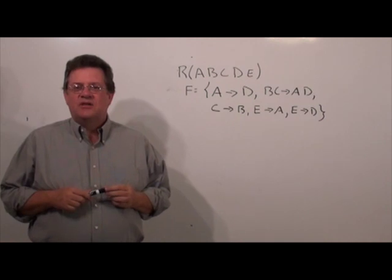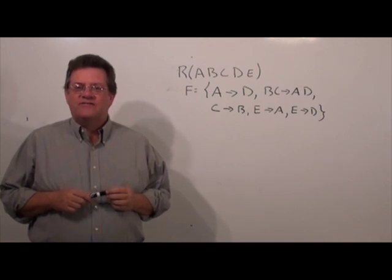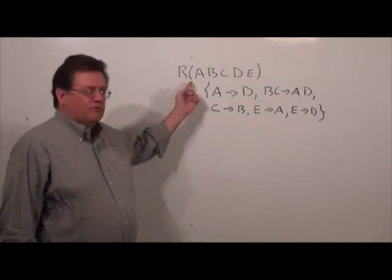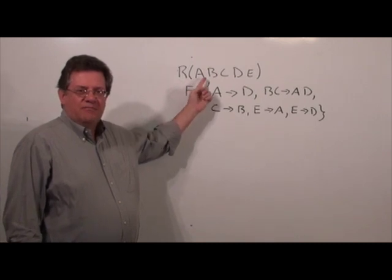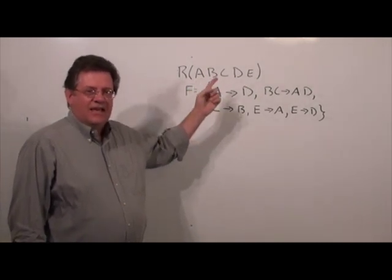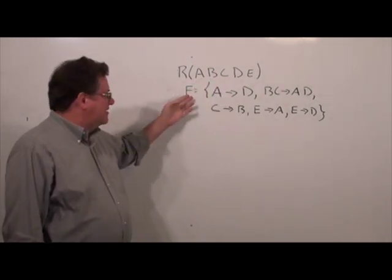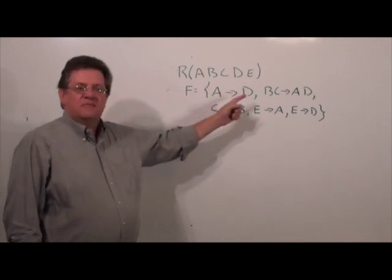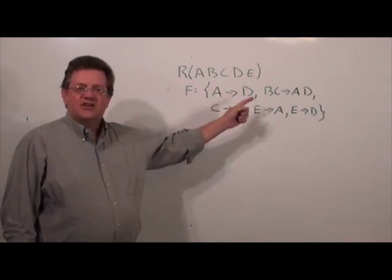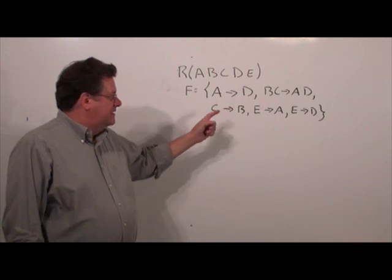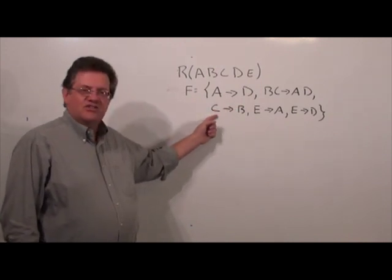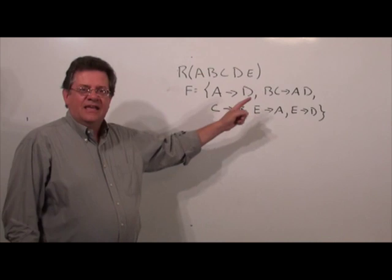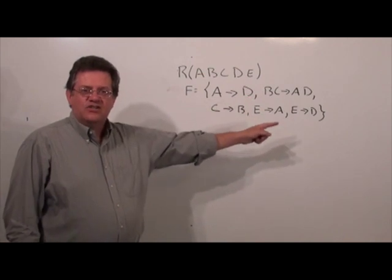Let's take a look at an example of how we'd actually find a minimal cover. Here we have a relation R with attributes A, B, C, D, and E, and a set of functional dependencies where A determines D, B and C determine AD, C determines B, E determines A, and E determines D.